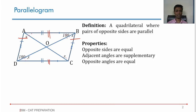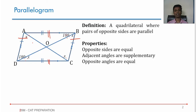Why is that? Two parallel lines cut by a transversal — these two are supplementary. Two parallel lines cut by a transversal — these two are supplementary. If this angle is supplementary with this and with this, these two are equal. So opposite angles are equal, adjacent angles are supplementary, opposite sides are equal, opposite sides are parallel.